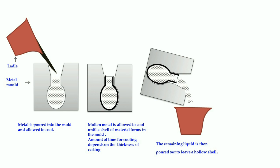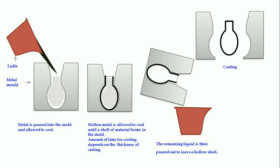In order to get the casting, in this way the slush casting process produces hollow articles without the core.